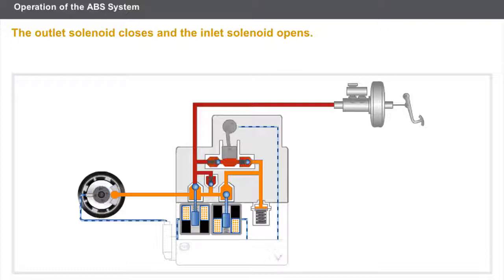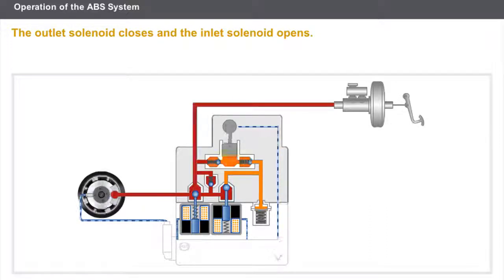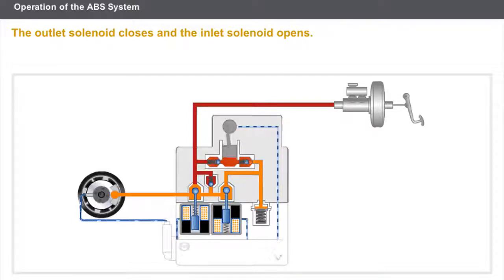Now let's look at the pressure re-increase phase. The outlet solenoid closes and the inlet solenoid opens. The master cylinder is reconnected to the brake caliper. Once again, the pressure increases and the wheel returns to its slip point. The faster the regulation frequency, the finer the regulation in braking pressure. Current systems can produce between 30 and 50 pulses per second.